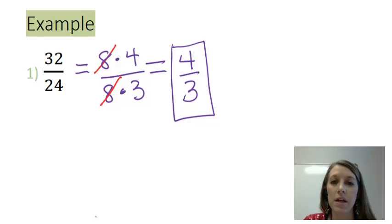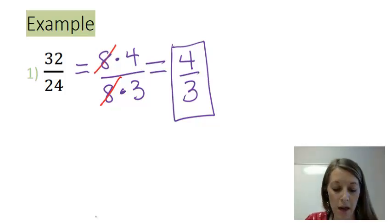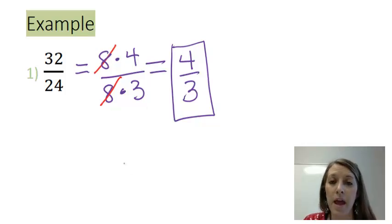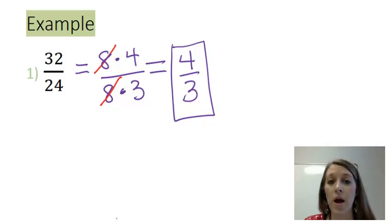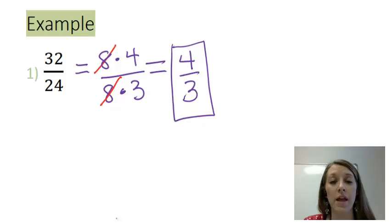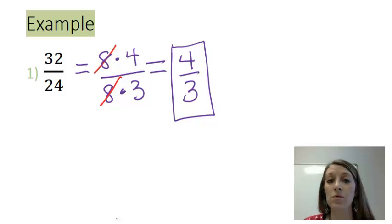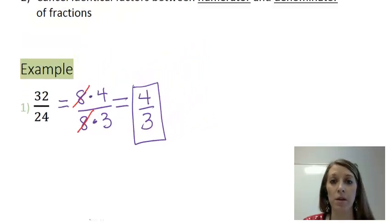Something else I want to comment on: typically in the past you might not write it as 8 times 4 or 8 times 3 — you might have just reduced by 8 directly. That's okay, but I'm going to write it out this way to help us with those other processes when letters or variables are involved. This is the process we're going to use so we get familiar with it.